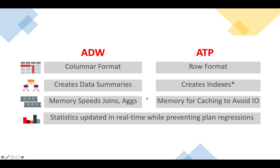Next is the memory configuration. In ADW, the majority of memory is allocated to the PGA, because it allows parallel joins and complex aggregations to occur in memory rather than spilling onto disk, which can be slow. In ATP, the majority of memory is allocated to the SGA, to ensure that the critical working set can be cached and avoid unnecessary IO.